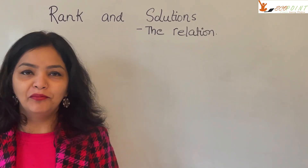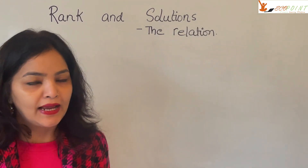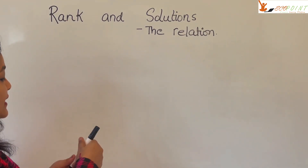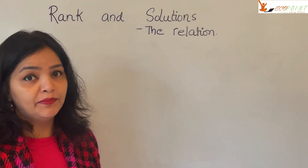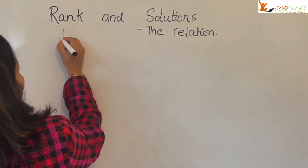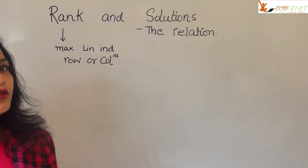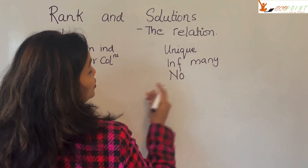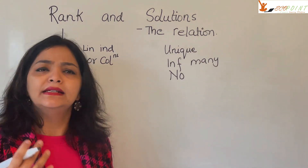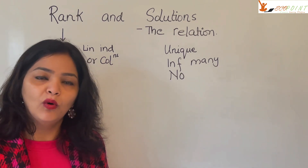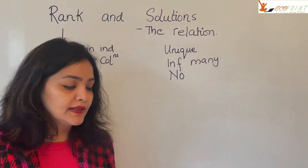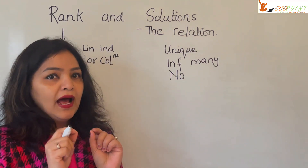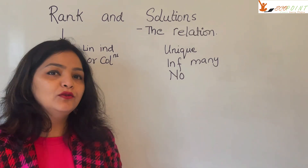Welcome to another lecture from Ecopoint. We have learned what rank is and what solutions to a set of equations means. Rank is the maximum number of linearly independent rows or columns. Solutions to a given system of equations could be unique, infinitely many, or no solutions at all — when there is no n-tuple that can solve all equations simultaneously, that is inconsistency. Today we will relate rank and solutions to a system of equations.